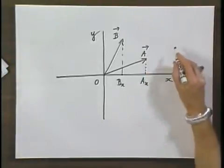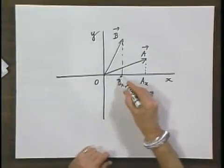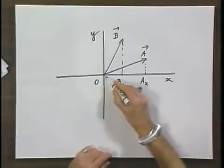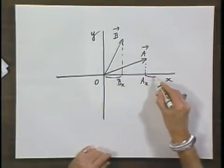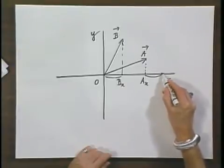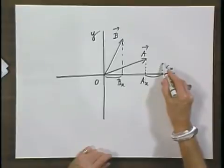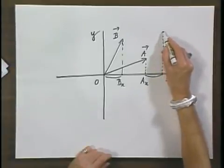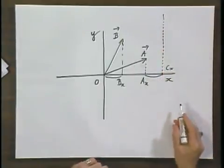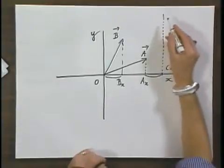So what should be the x component of the sum of the two? That must be B of x plus A of x. So I take this portion and I put it here, and so this must be C of x, the sum of the two. And so somewhere here along this line must be the end point of the vector C.